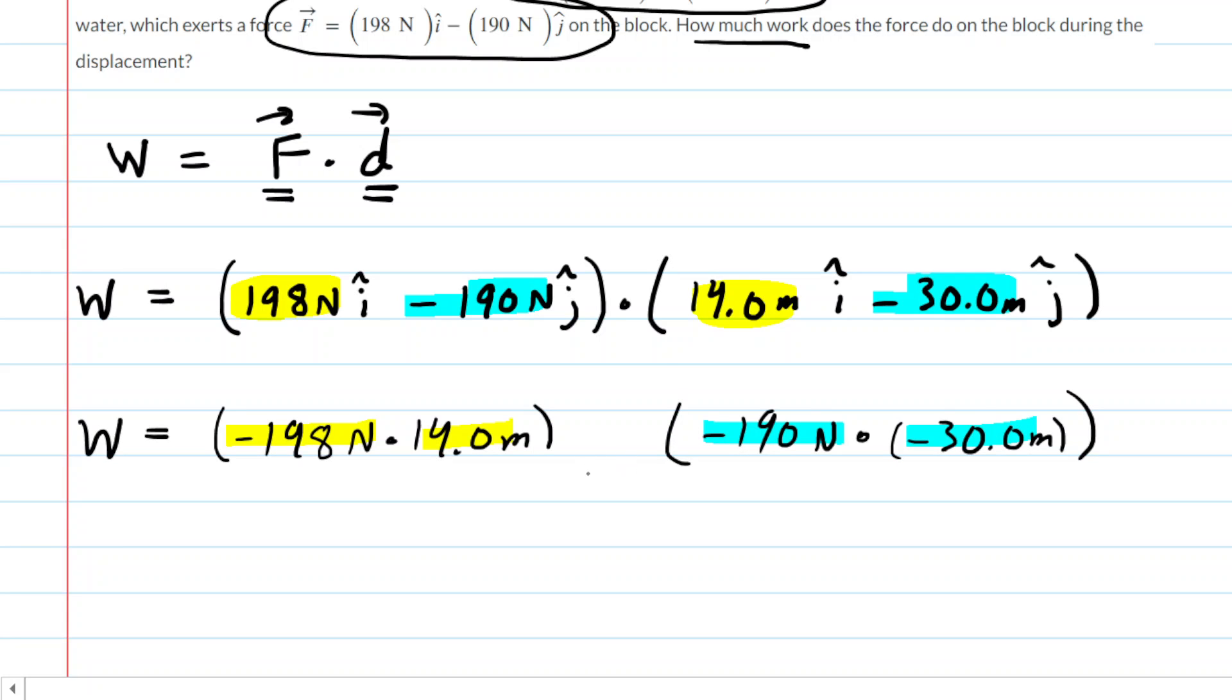There we have the product of each pair of components. And then between those results, we simply add those products. So we're going to multiply the x components, and when we do so, we should get 2772.